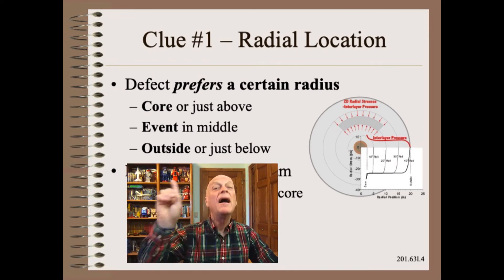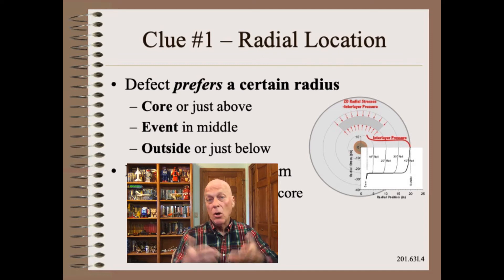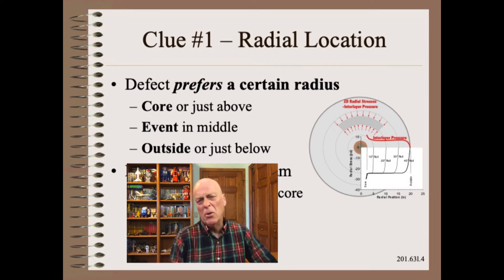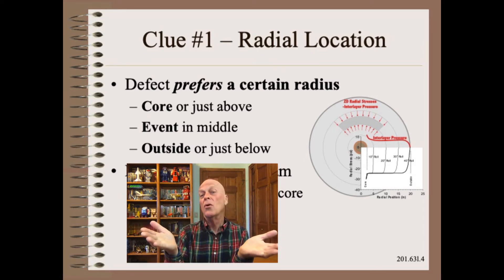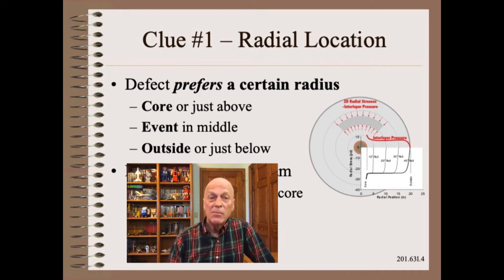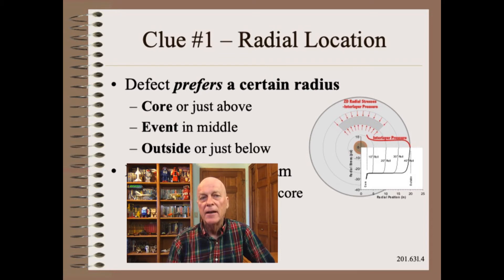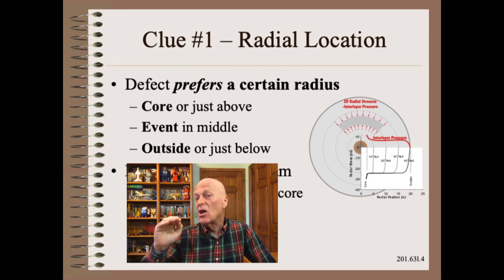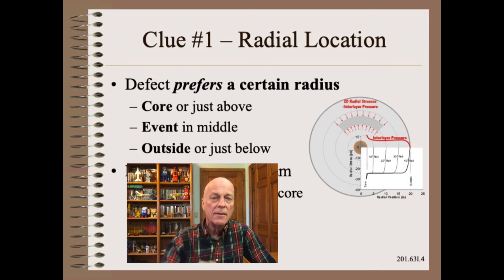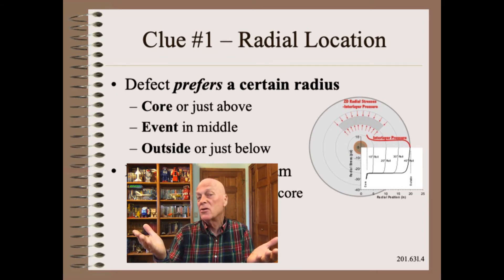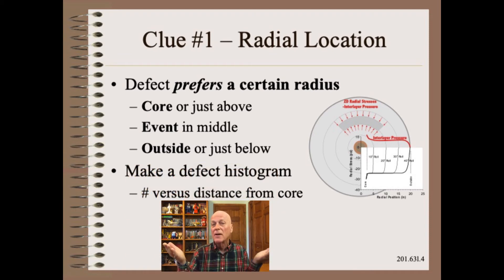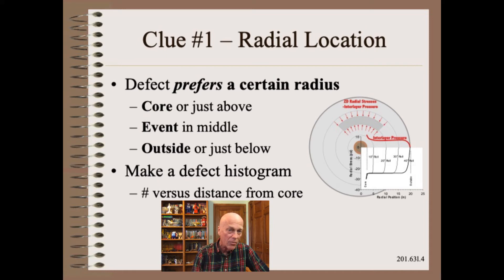The first effective clue to look for in a winding defect — as opposed to merely one found on wound rolls — is that the specific defect favors a certain roll radius. This could be at or just above the core, at some event in the middle of the roll, or near the outside of the roll. To tell whether there's a radius dependence is simple: merely count the number of defects in several radius regions in the wound roll.